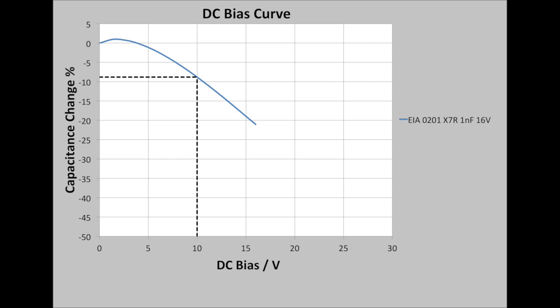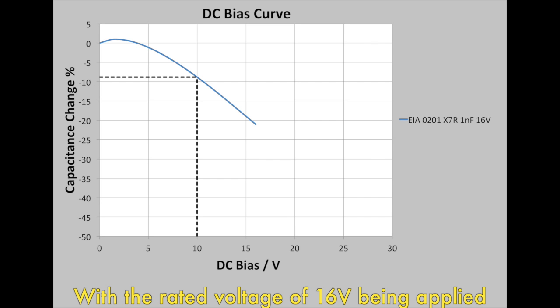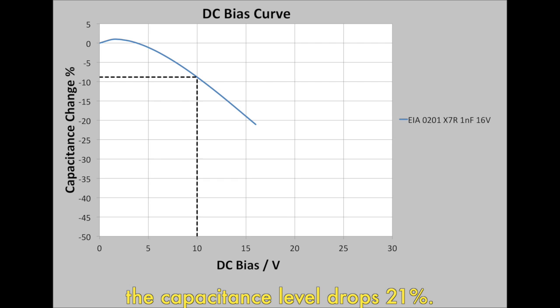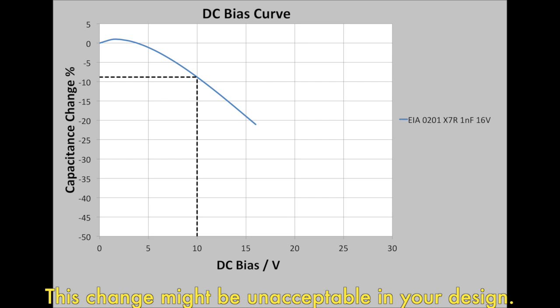The light blue curve represents a capacitor of 1 nanofarad. Notice just at 10 volts the capacitance decreases close to 9 percent. With the rated voltage of 16 volts being applied, the capacitance level drops 21 percent. This change in capacitance might be unacceptable in your design.